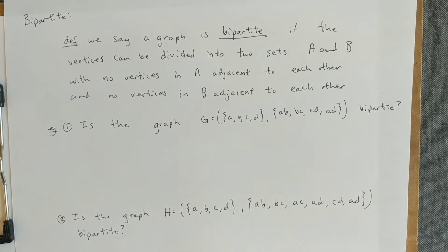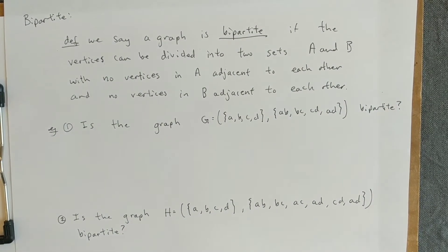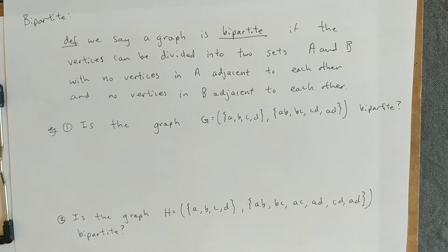Okay, bipartite. So the definition of this is weird, but the intuition you can build about it is pretty straightforward. Let's read the definition and then try to use it. We say a graph is bipartite if the vertices can be divided into two sets A and B with no vertices in A adjacent to each other and no vertices in B adjacent to each other.